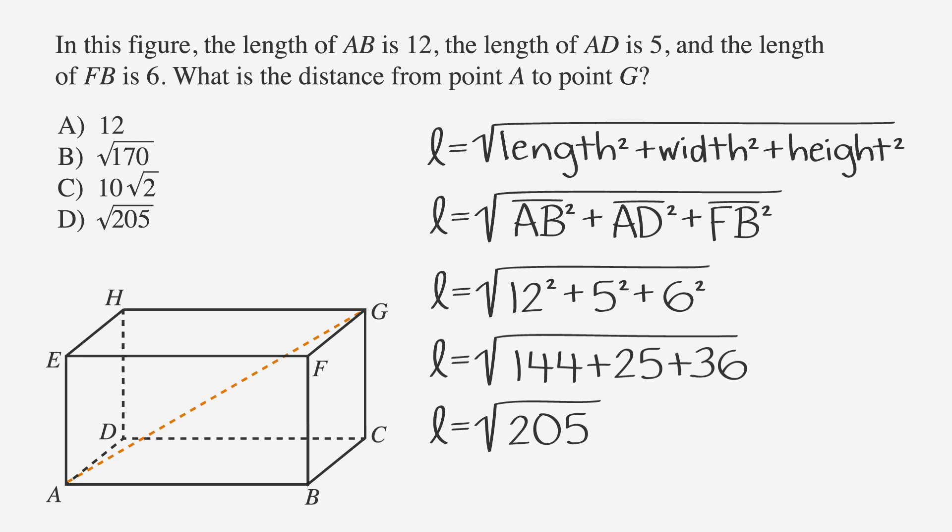Luckily, we don't need to plug that in to find the square root, because looking at the answer choices, D is the square root of 205. Go ahead and circle it, because it's the right answer, and get ready to take your place in the winner's circle.